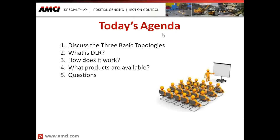Our agenda today: we will begin by discussing the three basic network topologies — the star network, the linear network, and the ring network. From there, we will move to introducing what exactly is DLR, or device-level ring. After a brief introduction, we will discuss how it actually works — what happens during normal operation and when there's a break in the network. Then there will be a screen discussing the different products available for DLR.